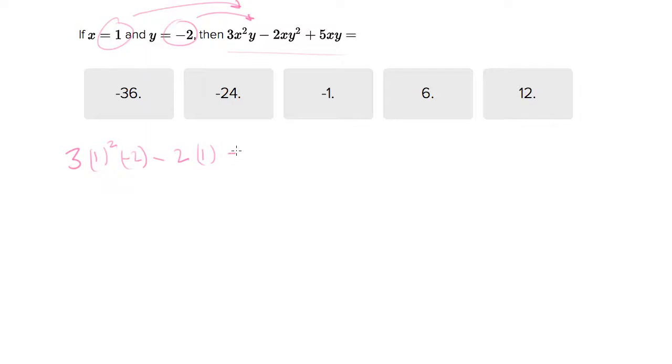Y is negative 2, in this case squared, plus 5 times x times y. That'll be our answer.